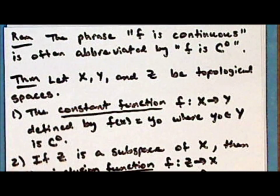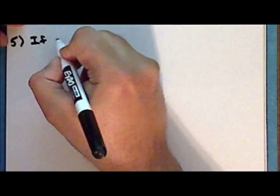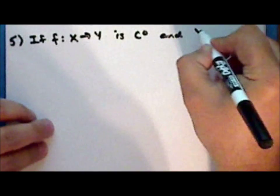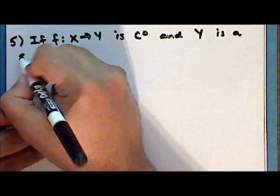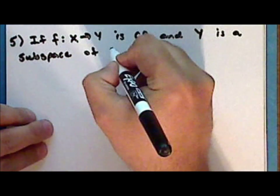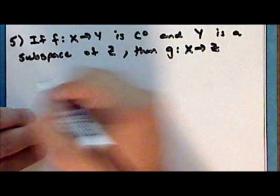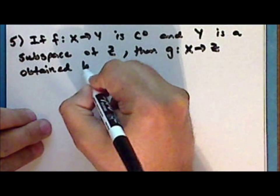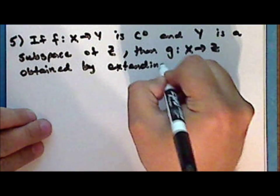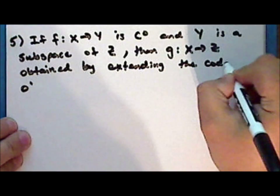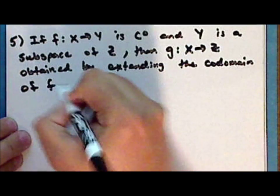If the function F from X into Y is continuous, and the space Y is a subspace of Z, then the function G mapping X into Z, obtained by extending the range or codomain of the function F, is continuous.